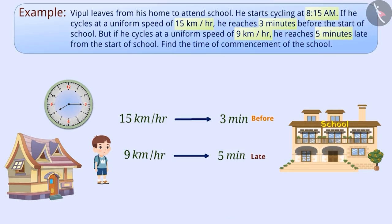Let's understand this question first. Here, we are given the relation between speed and time. Suppose the time left for school to start is x minutes. In this way, when Vipul cycles at a uniform speed of 15 km/hr, he reaches the school 3 minutes earlier, that is, (x - 3) minutes. But when he cycles at a uniform speed of 9 km/hr, he reaches 5 minutes late, that is, (x + 5) minutes.